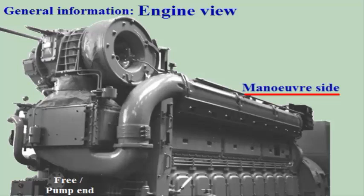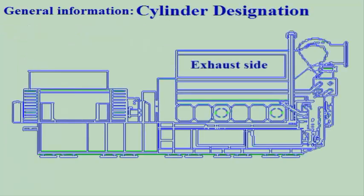The opposite side is called the exhaust side. The designation of the cylinders on Ullstein Bergen engines begins from the pump end. The cylinder closest to the pump end will be number 1, and the numbers increase towards the flywheel end.